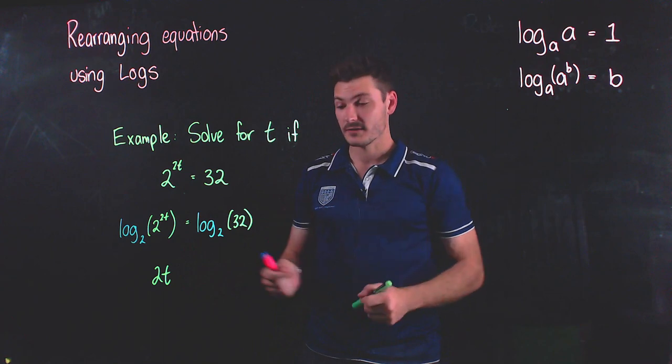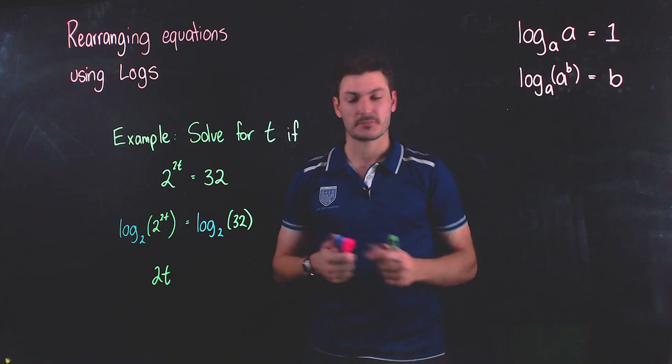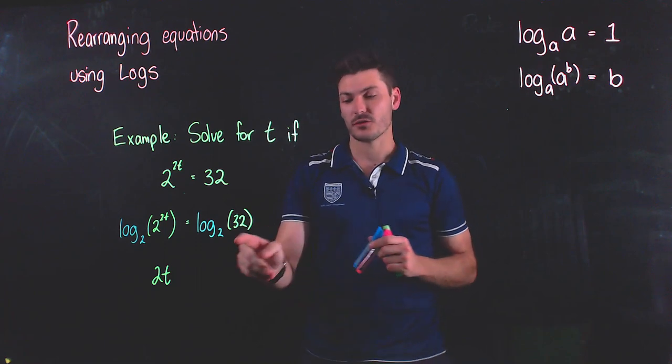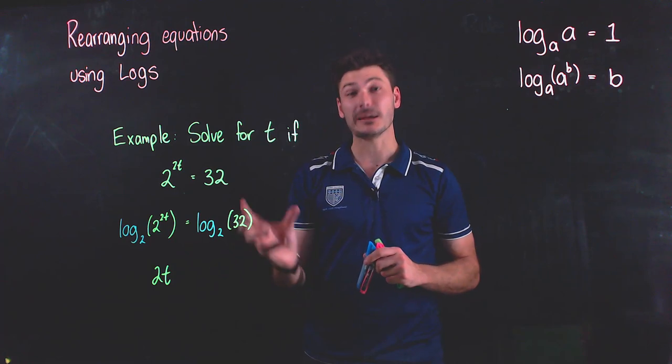Now my right hand side, this log base two of 32, if you're switched on and you know your exponential values, you might know that 32 is two to the power of five, and so this right hand side is just equal to five.